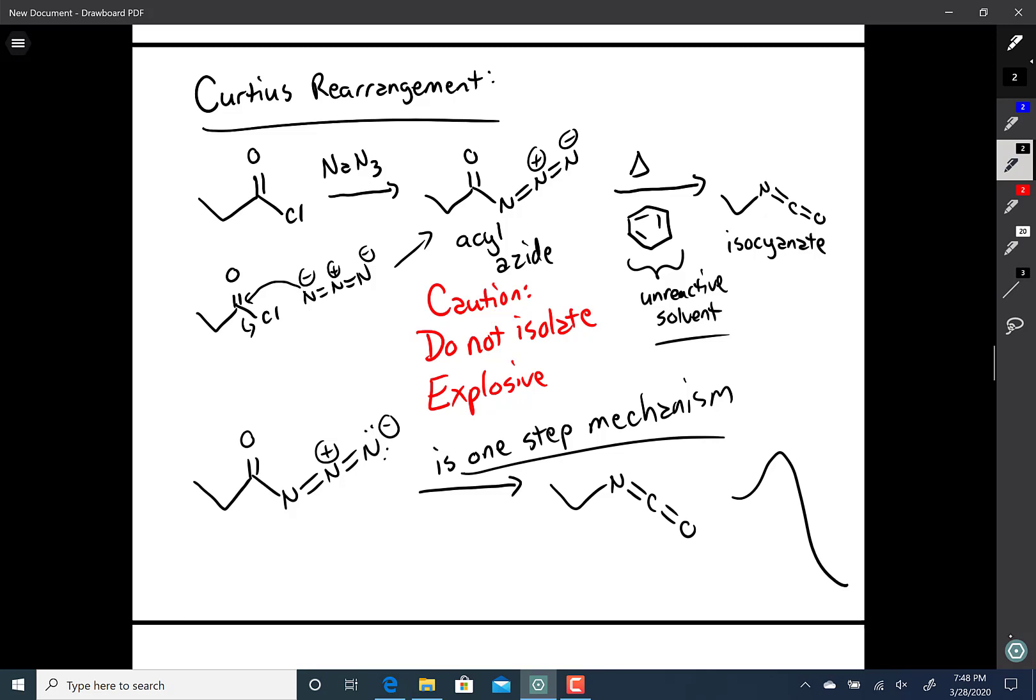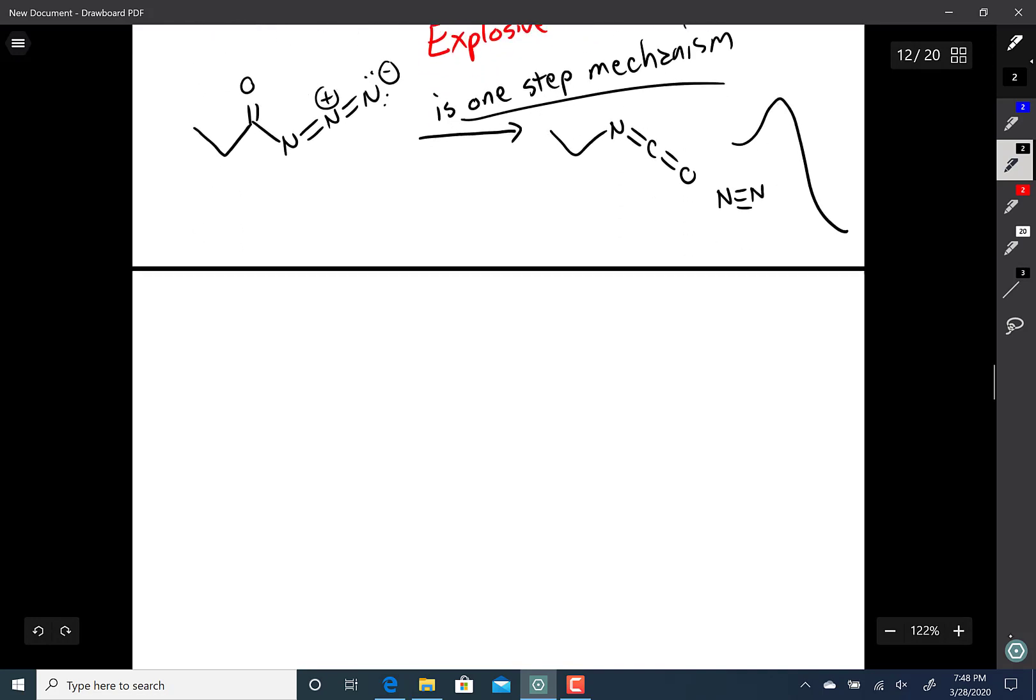Go ahead and try to draw out the mechanism. The byproduct of this with the acyl azide, sorry, with the isocyanate, is nitrogen gas. Try the mechanism. Okay. Let me draw the mechanism. If you weren't able to see it. Don't worry.